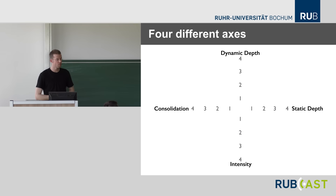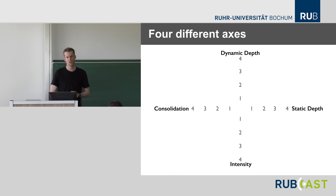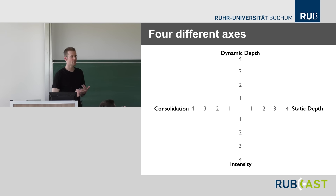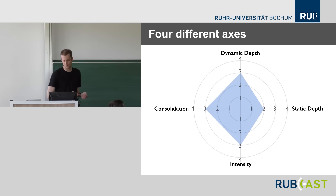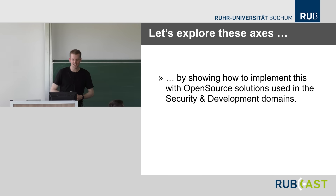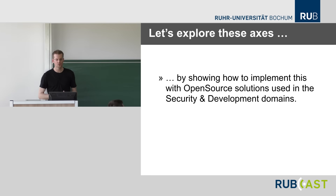I will present four axes of this maturity model for Security DevOps: dynamic depth, static depth, intensity, and consolidation. There are four different belts — four different levels we can reach in terms of automating things. We can draw nice graphs for management. We'll focus on open source tools that can be used to implement this approach.